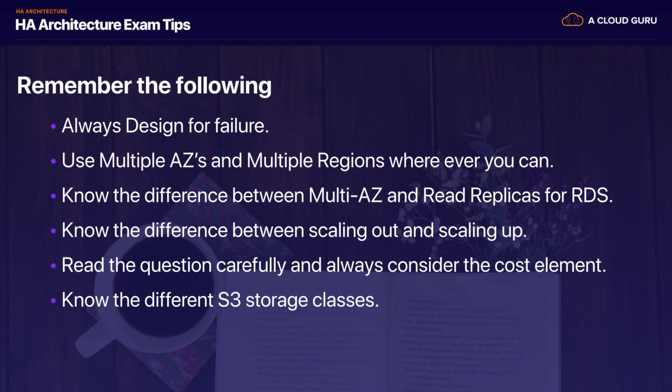You should always know the difference between S3 storage classes going into your exam. Standard S3 and Standard S3 Infrequent Access are both still highly available. The ones that are not highly available are Reduced Redundancy Storage and S3 One Zone-IA. That's it for this lecture. In the next lecture, we're going to put everything we've learned into practice by creating a highly available WordPress site, serving content out of CloudFront, using Route 53, application load balancers, auto scaling groups, and S3 to store some of our code. Please join me in the next lecture.